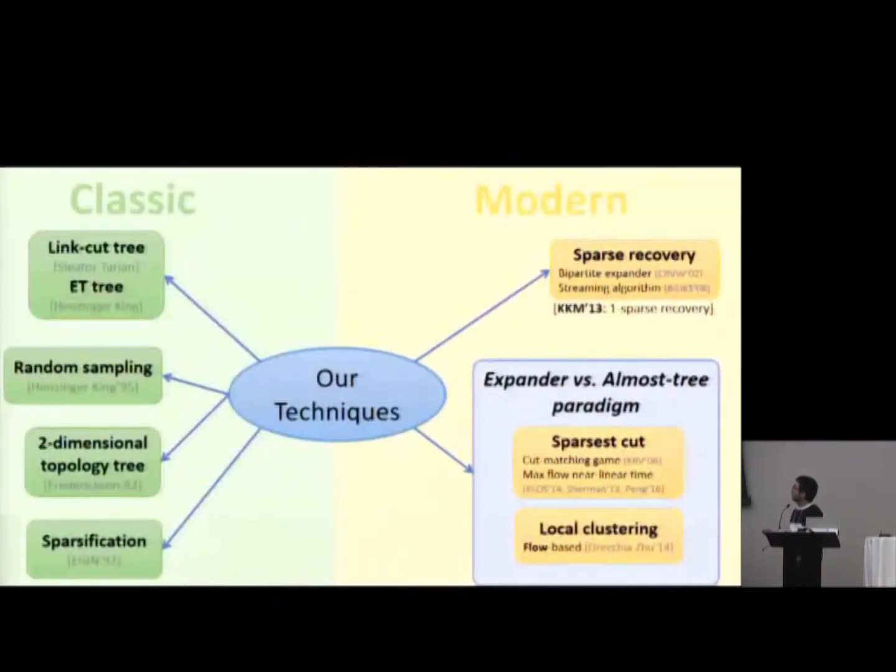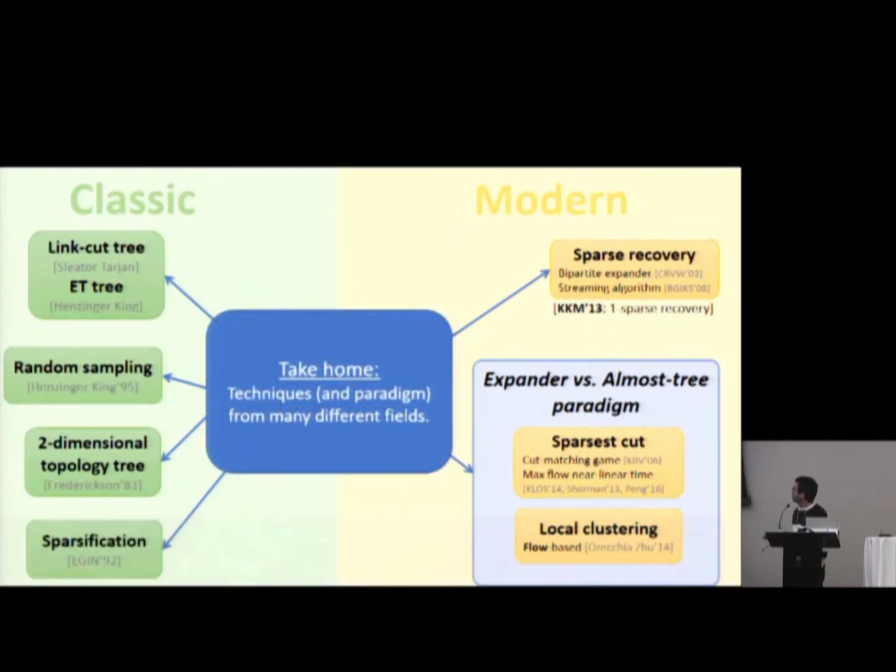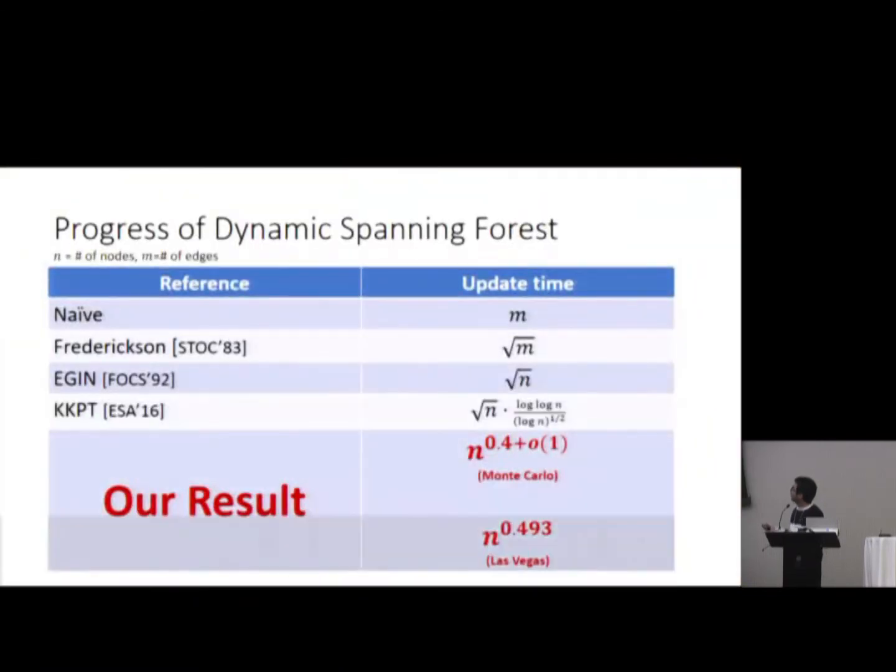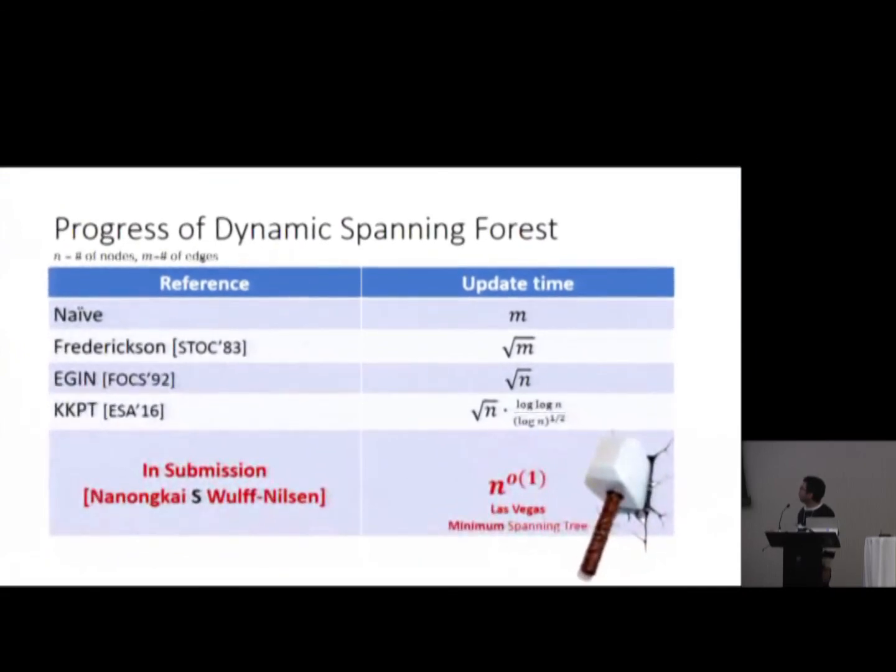So let me conclude. What is nice about this problem is that you have a very simple problem, a spanning tree problem. Spanning forest is very simple in the static case. But once you look into dynamic setting, it brings together many techniques from different fields. So that's what I like about this. And what we have is that we improve the bound polynomially, which stood for quite a long time. And actually together with Danupon and Wulff-Nilsen, using our technique and Christian's technique and then together with some new ideas, we can break this bound into n to the o(1), even for minimum spanning tree problem.